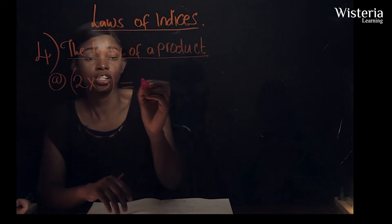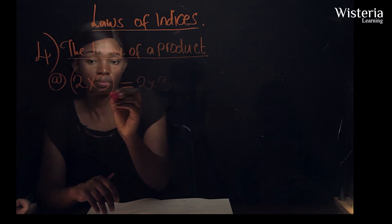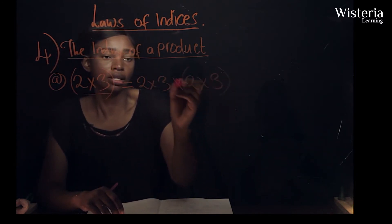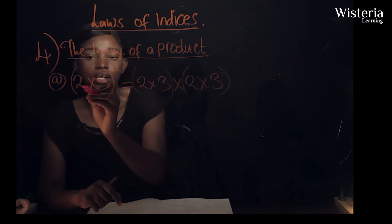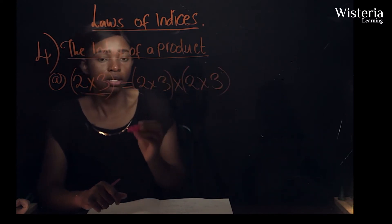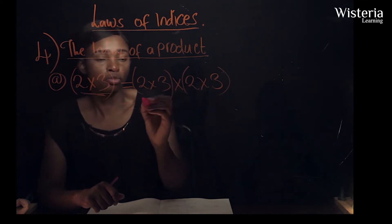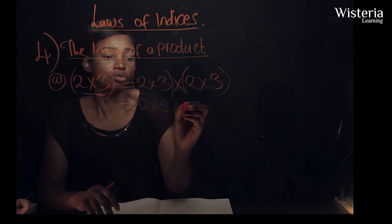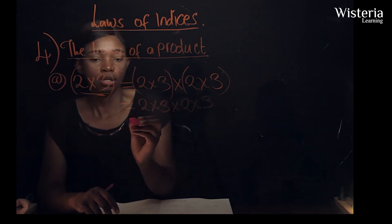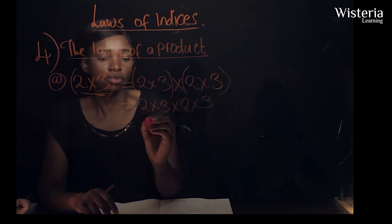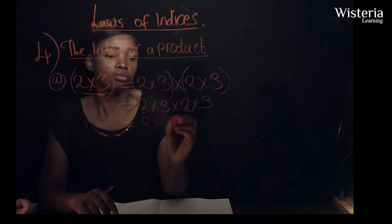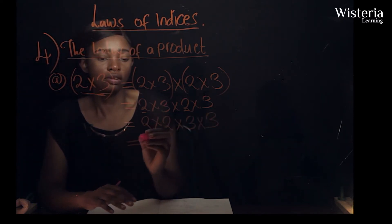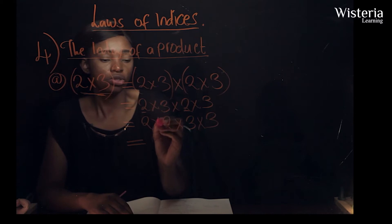Normally when expanding it, it will be two times three, multiplied twice — like that. So when we remove the brackets it will be two times three times two times three. Then we group the like terms: two times two, times three times three.